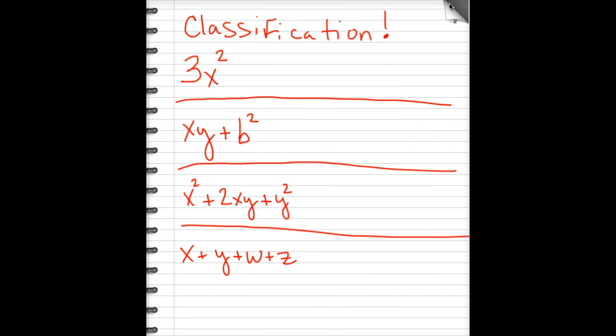The first thing we're going to do is talk about classification. If you watched my previous video, we talked a lot about monomials. Monomials are like this guy right here, 3x². It's just a single term consisting of numbers and letters, or a coefficient and variables. Mono means one.